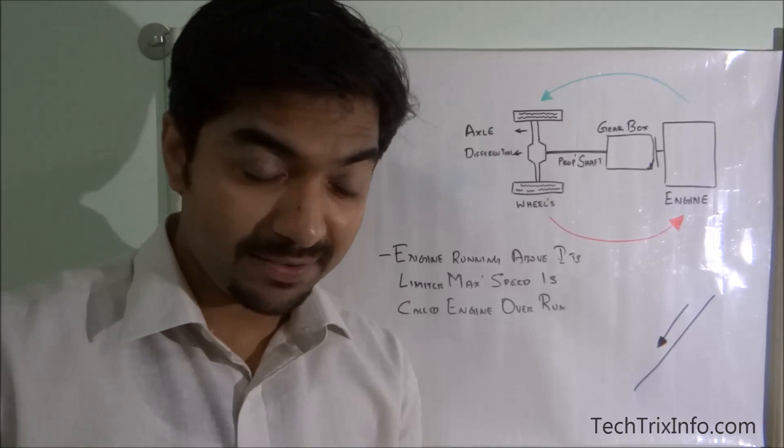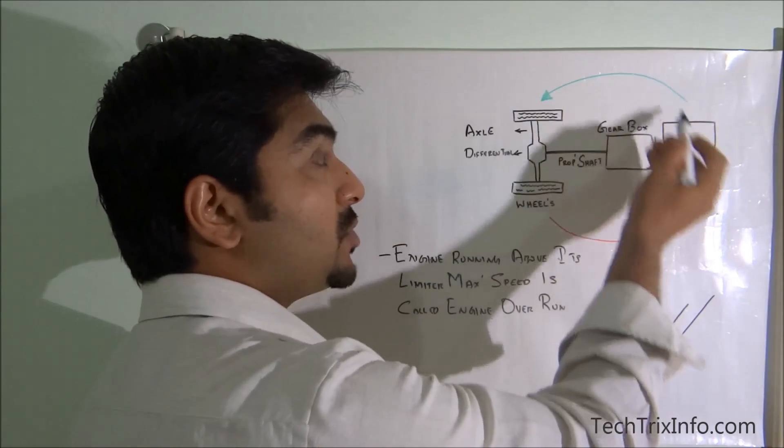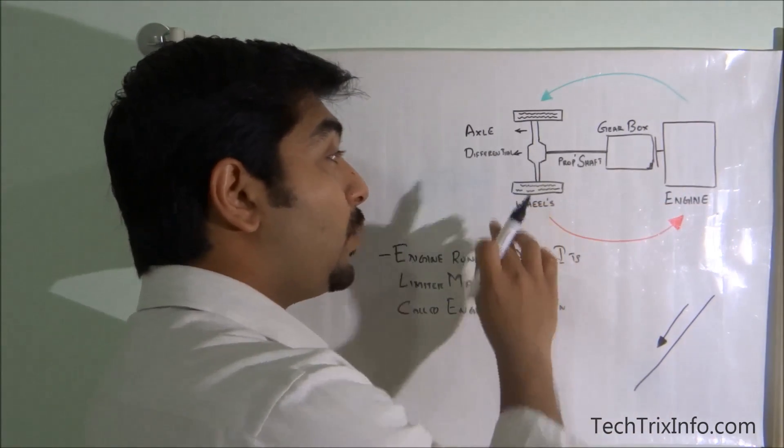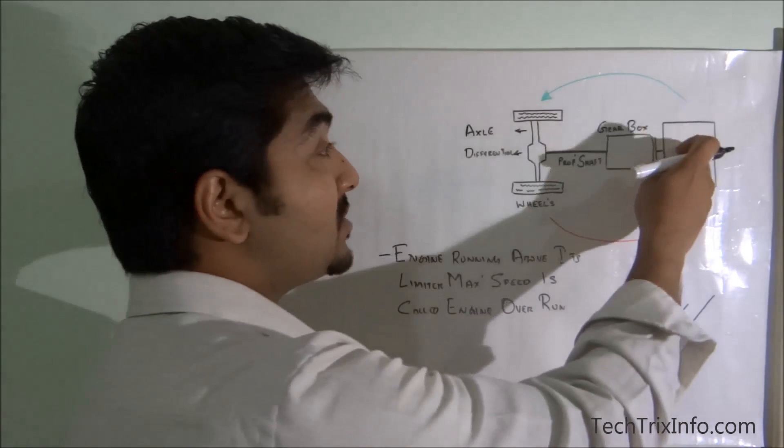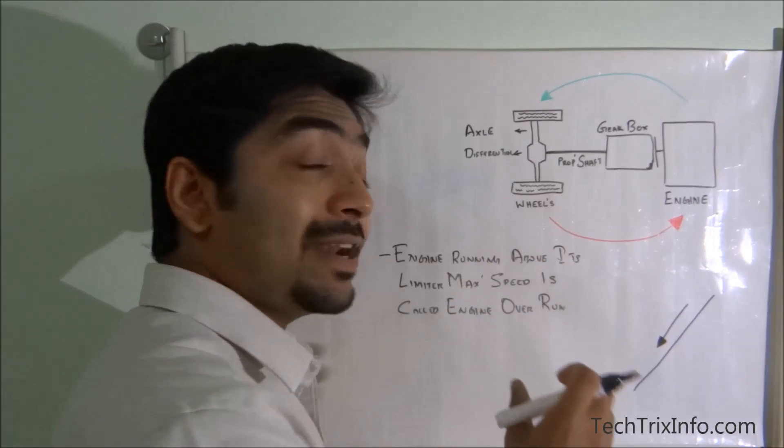So that's normally how the engine is driving the rear wheels, the normal phenomena. You can see the green line showing the engine driving the wheels. But in engine overrun, the reverse phenomena is happening. What happens is that the wheels start to drive the engine.